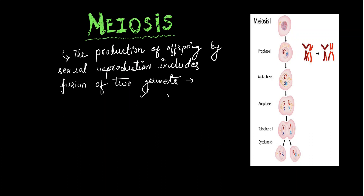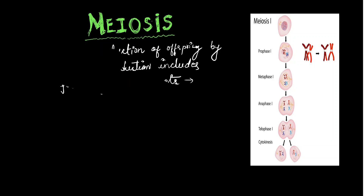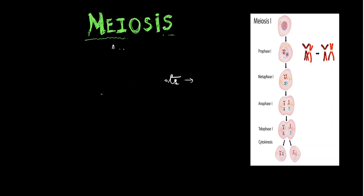The main difference between mitosis and meiosis is that in meiosis, germ cells are required — germ cells, or you can say gametes.